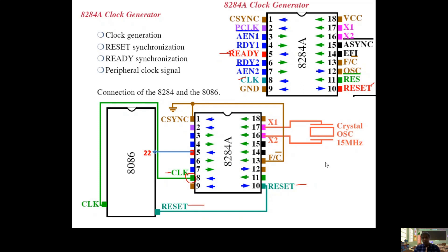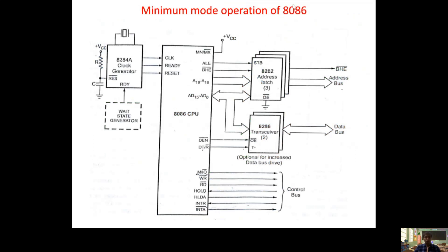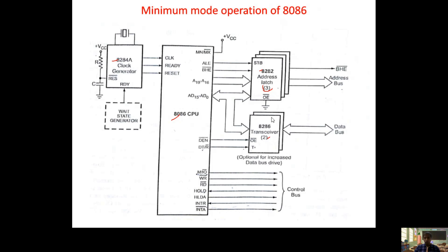Now let us see what is minimum mode. This is the minimum mode operation of 8086. There is an 8086 CPU with 40 pins, a clock generator 8284A, and latches — IC number 8282. We are taking three latches because we have 21 multiplexed lines. There are also transceivers — a transceiver transmits or receives data. We are taking two transceivers because we have a 16-bit data bus, so we need two transceivers. The output of the transceiver is bidirectional data, whereas the address is unidirectional.